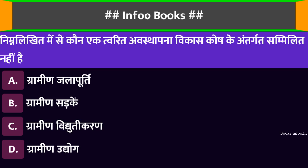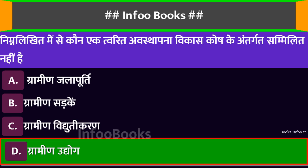निम्नलिखित में से कौन एक त्वरित अवस्थापना विकास कोश के अंतर्गत सम्मिलित नहीं है? Option A: ग्रामीण जलापूर्ति। Option B: ग्रामीण सड़कें। Option C: ग्रामीण विद्युतीकरण। Option D: ग्रामीण उद्योग। सही विकल्प है: ग्रामीण उद्योग।